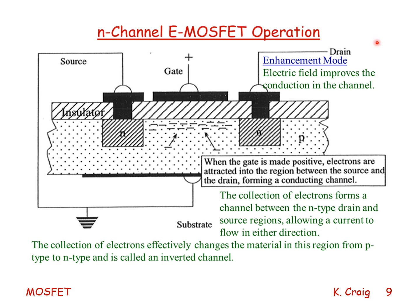Various diagrams describe the construction and operation of the N-channel E MOSFET: gate, source, drain, insulator, metal, N-type semiconductor, and P-type semiconductor. It's an enhancement mode because the electric field improves the conduction in the channel.